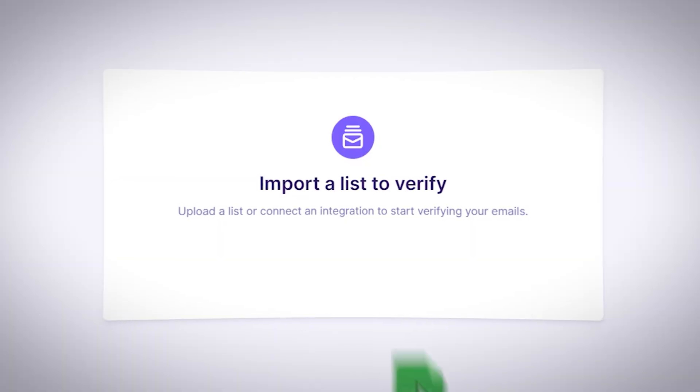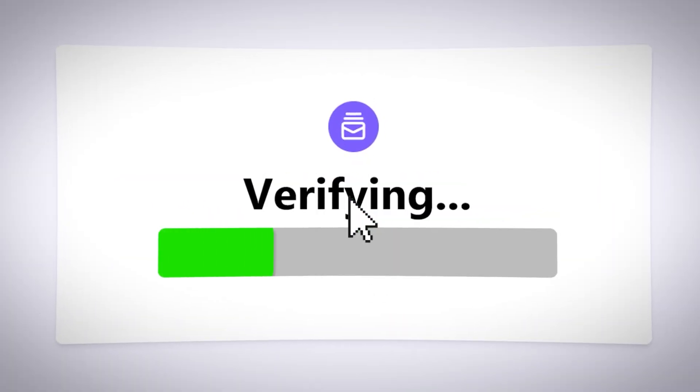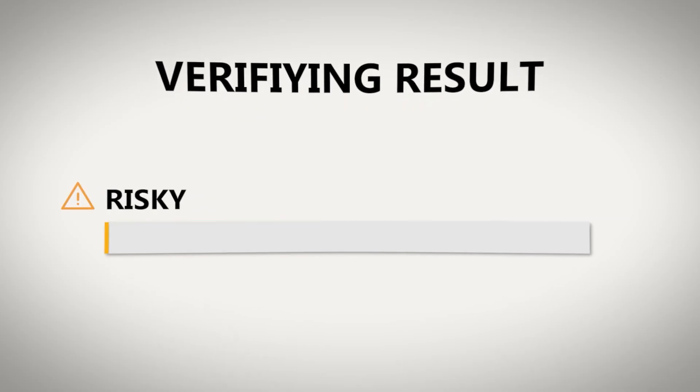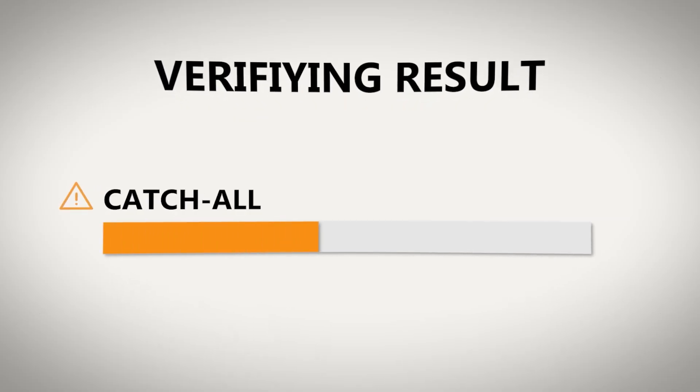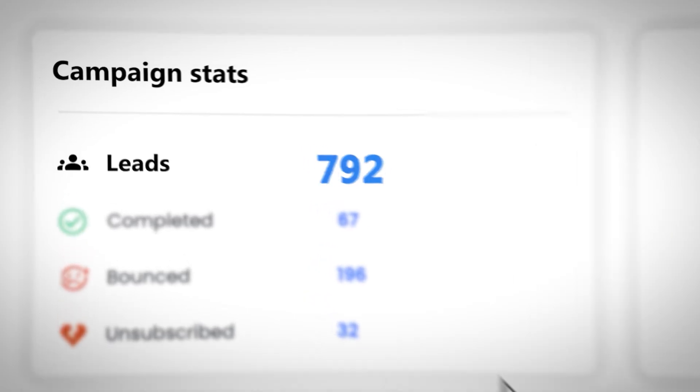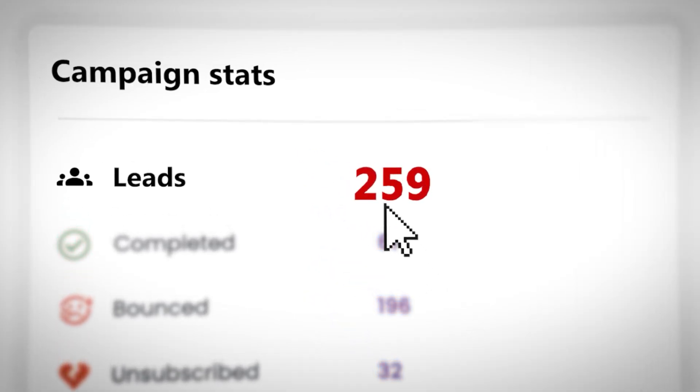What we need to do instead is verify our emails by putting them through a verification process. The verification process will tell you one of two things: is this email verified or not? But the problem with modern verification tools is that they will tell you if it's good, risky, catch-all, or bad. You can only send to one of those four categories, which drastically reduces the amount of people you can send to.